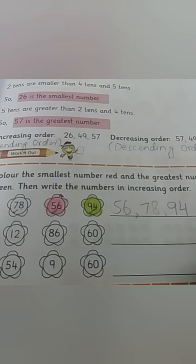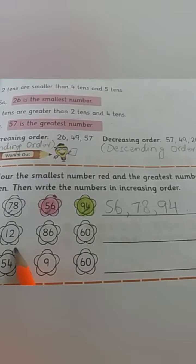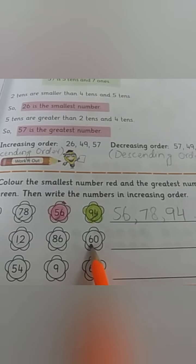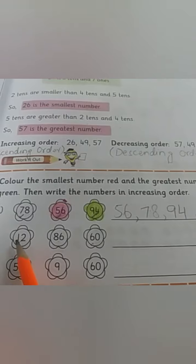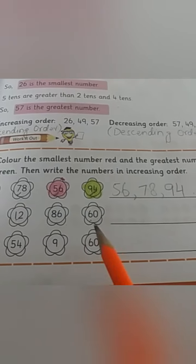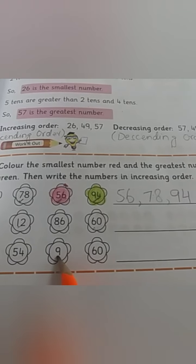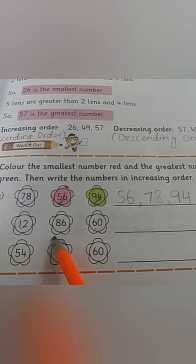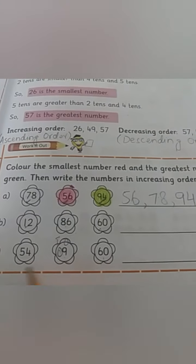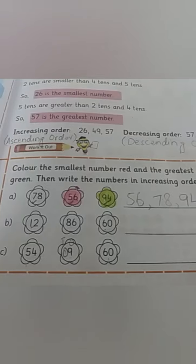Baaki dho ko aap khud karengi to understand. Thik hai? Now let's see: 12, 86, 60. Ismein sab se chota kaun sa hai? 12 with only one tens. Ismein eight tens hai, ismein six tens hai. So 9 is the smallest, aur bada kaun sa hoga? Six tens wala ya five tens wala? Six tens wala bada hoga. This you will color green, this you will color red, and then you will arrange it over here.